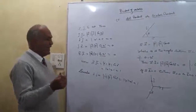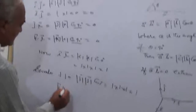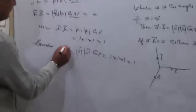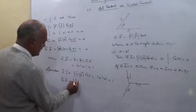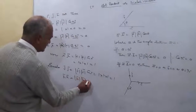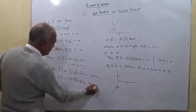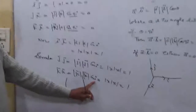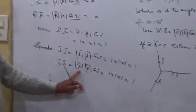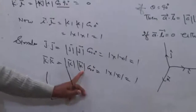Is that clear, students? Yes. Any doubt? No. Now, what will be the value of K dot K? Since it is the same vector, the angle between K and K is 0. K dot K equals |K| times |K| times cos 0, which equals 1 times 1 times 1, equal to 1. The magnitude of the K unit vector is 1.